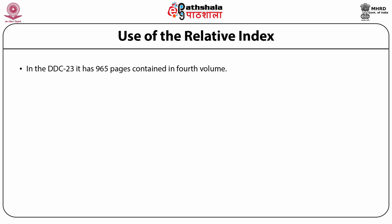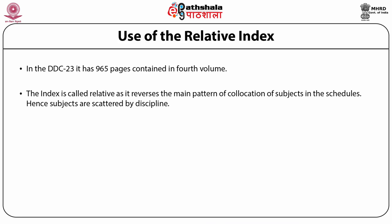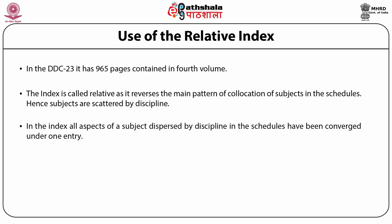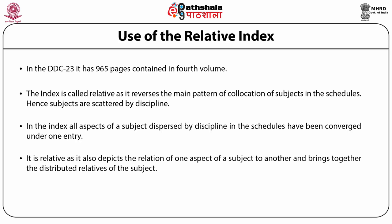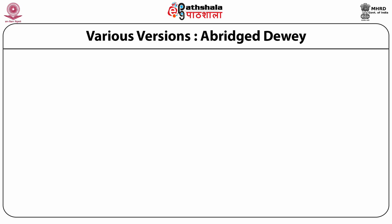In DDC 23rd, the index has 965 pages contained in the fourth volume. The index is called 'relative' as it reverses the main pattern of collocation of subjects in the schedules. Subjects are scattered by discipline in the schedules but they are brought together in the index. All aspects of a subject dispersed by discipline have been converged under one entry, providing another approach to knowledge organization. It is relative as it also depicts the relation of one aspect of a subject to another and brings together the distributed relatives of a subject or topic.